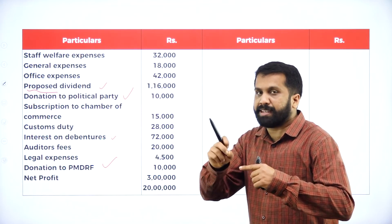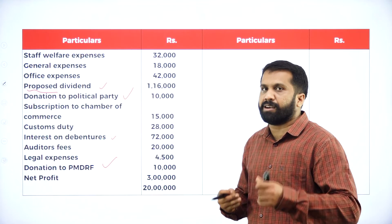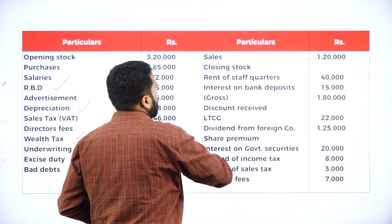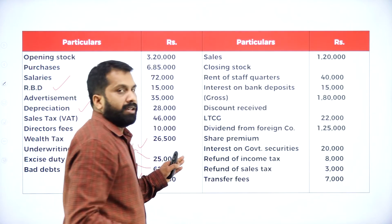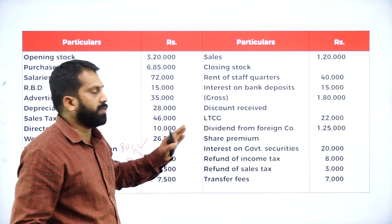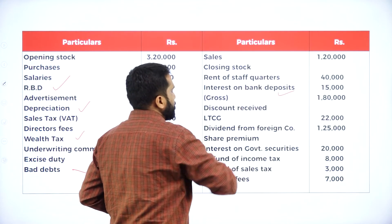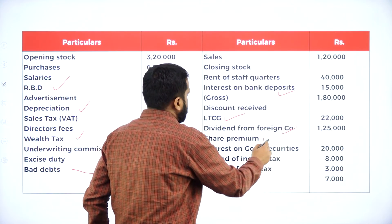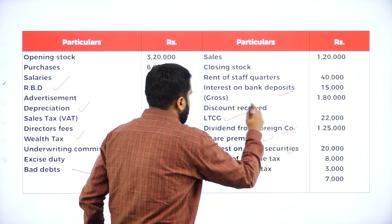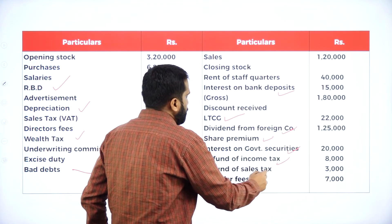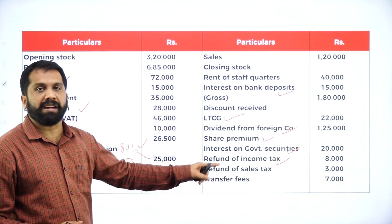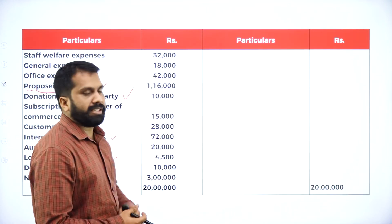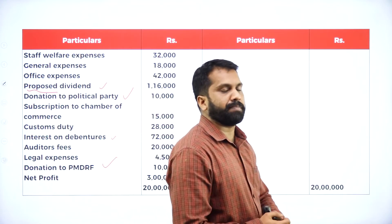What are the things you are supposed to minus? You will get it from the right side or credit side of your question. Sales — no. Closing stock — no. Rent of stock quarters — they have given in the adjustment, that is for business purpose. Interest on bank deposit — yes. Discount — no. Long-term — yes. Dividend — yes. Share premium — yes. Interest on government — yes. Refund of income tax — yes. Refund of sales tax — no, sales tax is part of your sales. Transfer fees — no. These are the things you are supposed to add and you are supposed to minus.